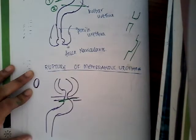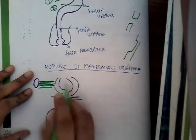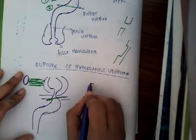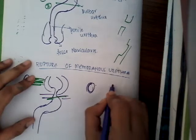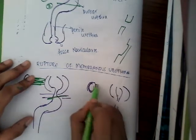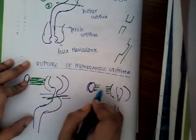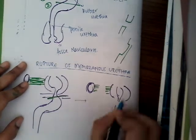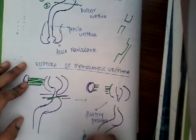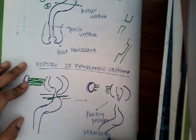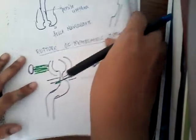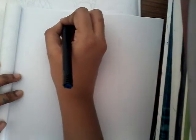The prostate is attached to the pubic bone by a ligament called the puboprostatic ligament. Whenever there is a pelvic fracture, this puboprostatic ligament may get disrupted, causing injury to the membranous urethra. The prostate then has no connection with the puboprostatic ligament and no connection with the urethra — this is called a floating prostate, also known as the Verumontanum sign.